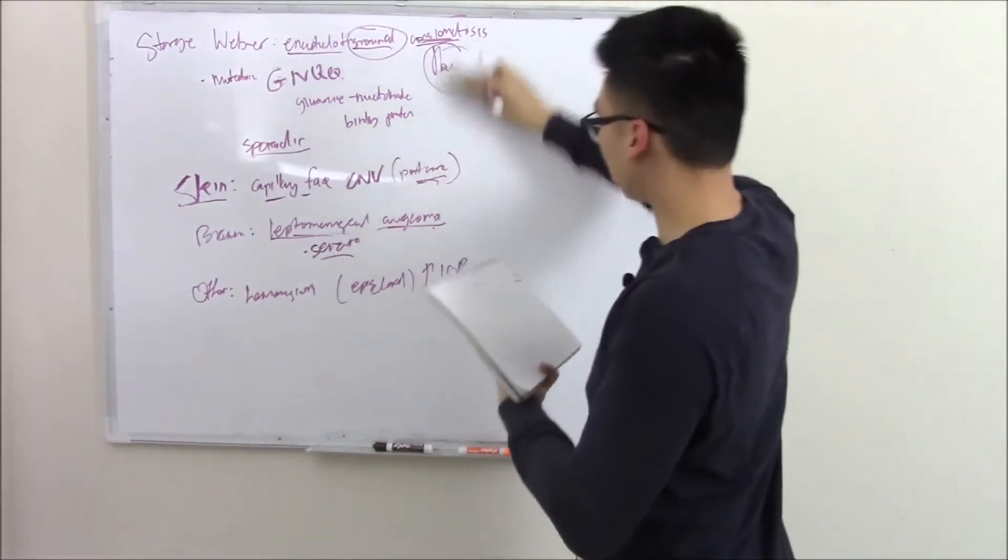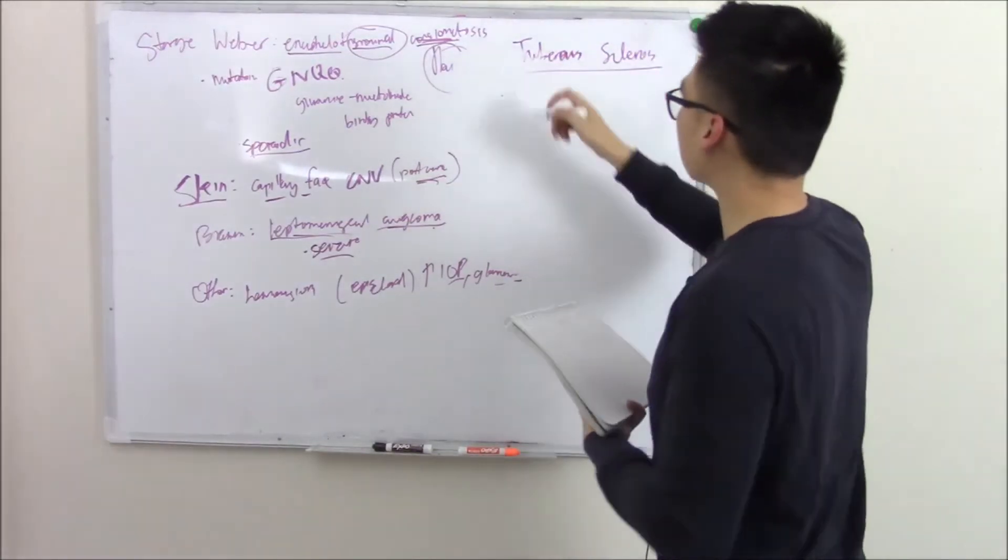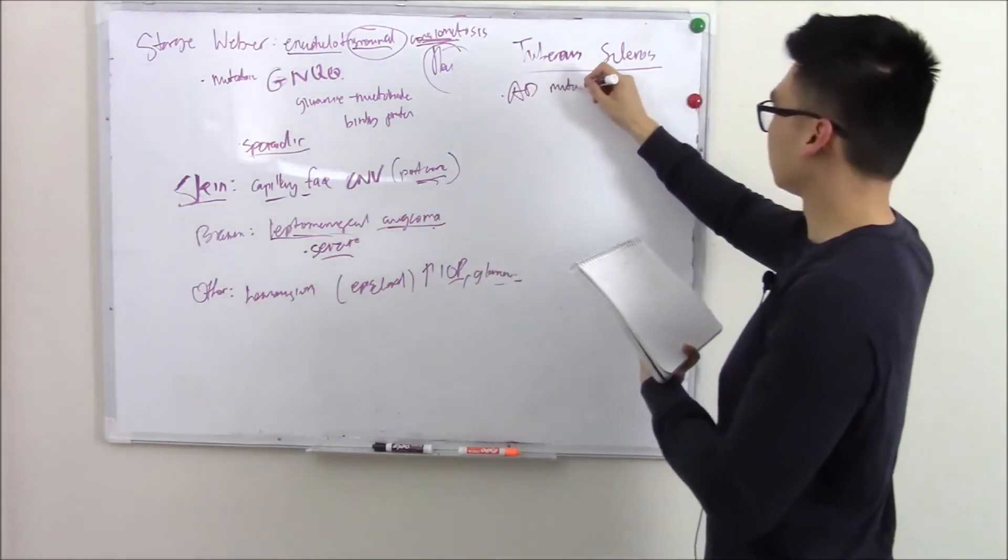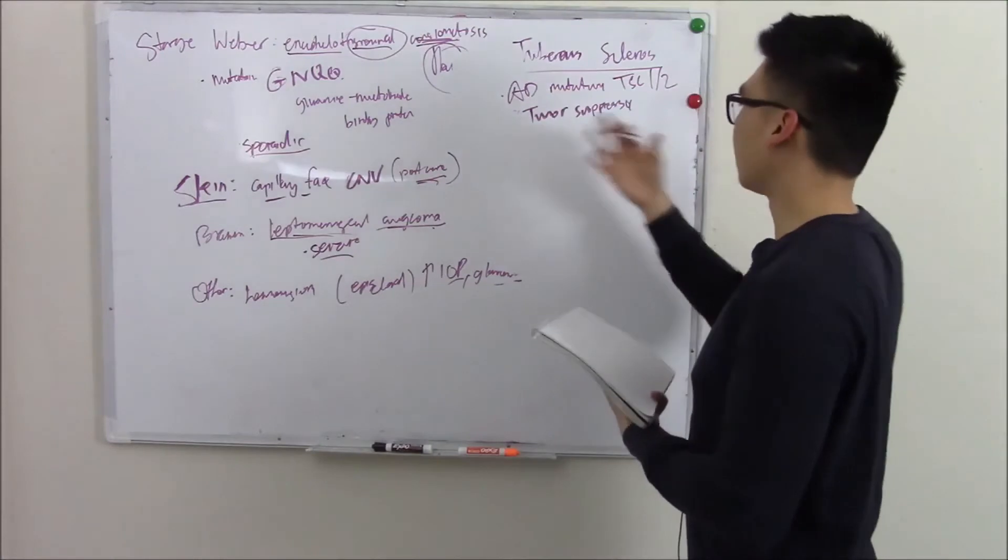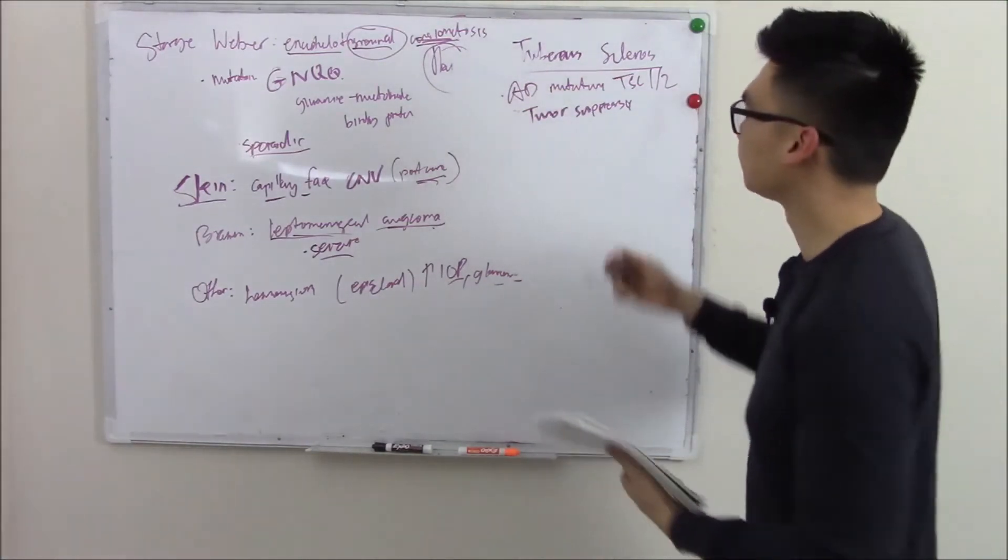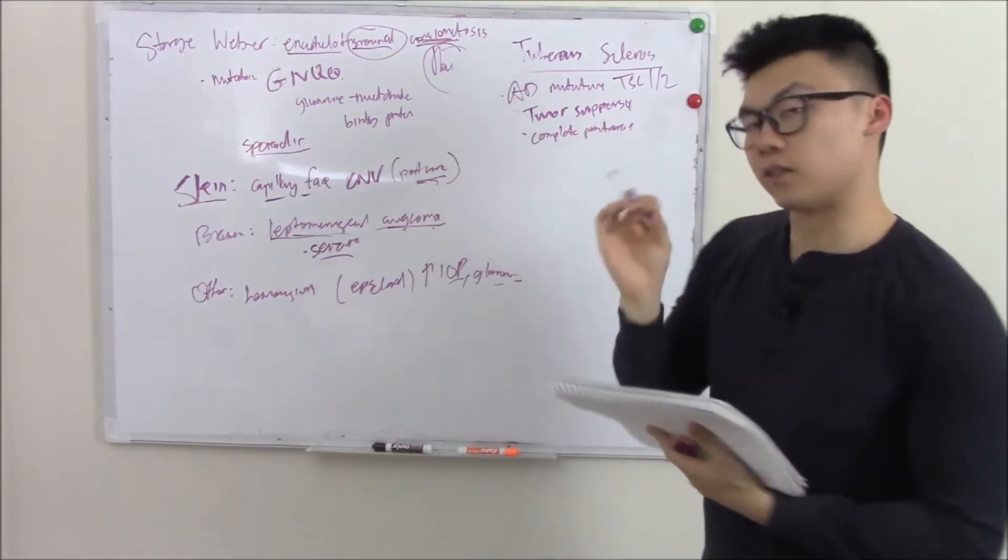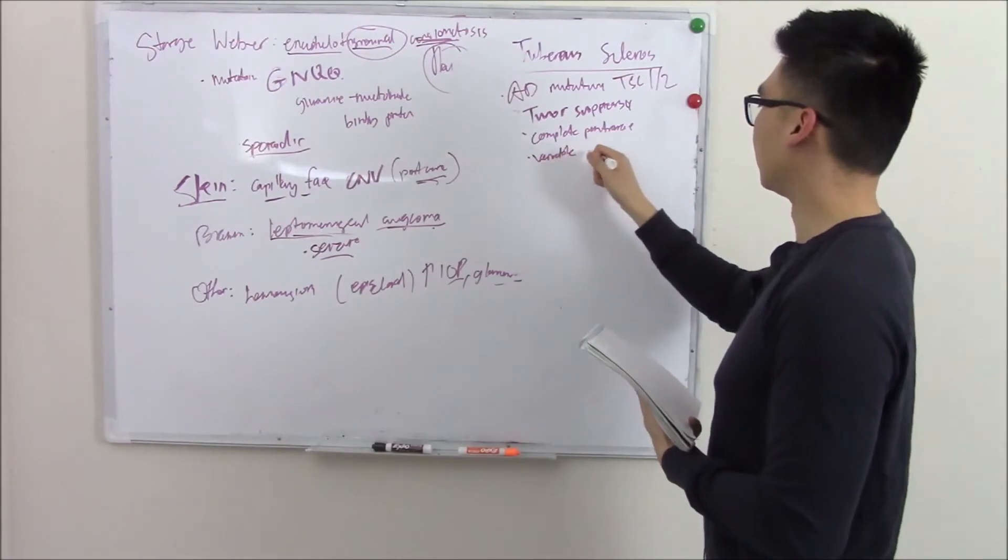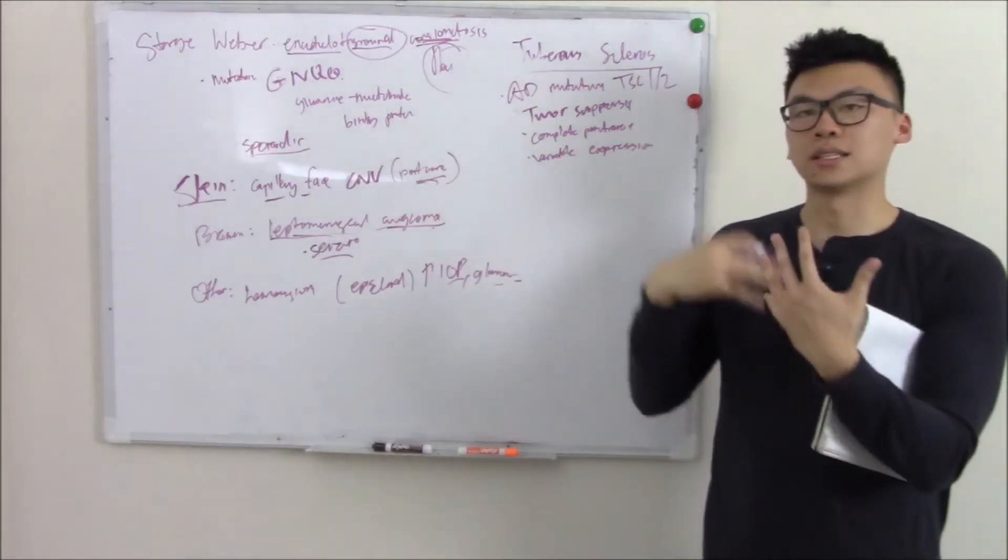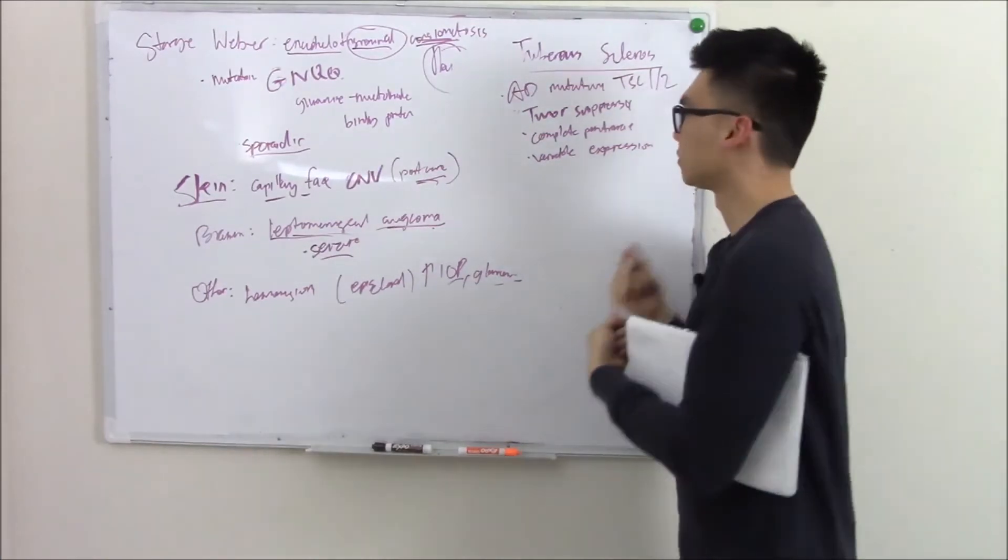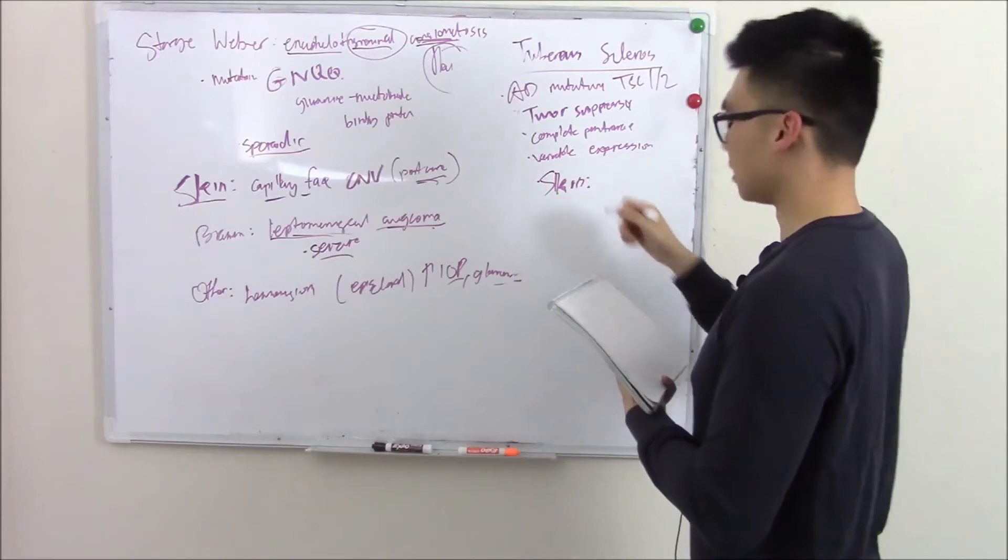Our next one is tuberous sclerosis. Again, a genetic disorder. This is an autosomal dominant mutation in your tuberous sclerosis 1 and 2 genes. These are tumor suppressors. If you have a mutation in a tumor suppressor, you have uncontrolled cell proliferation. Something you should know: this has complete penetrance. That means everyone that has this mutation will show signs of it. However, it has variable expressivity. Everybody that has this will show it, but show it to differing degrees.